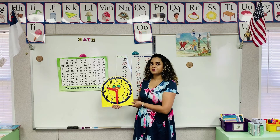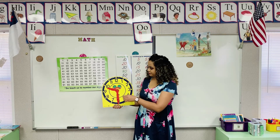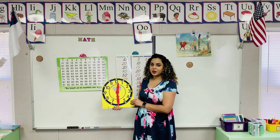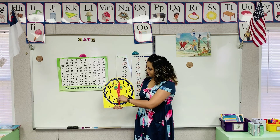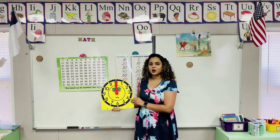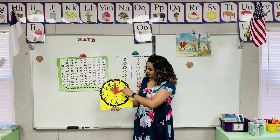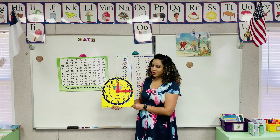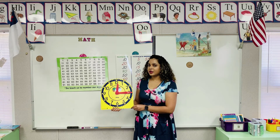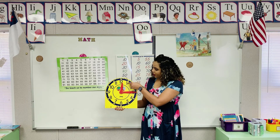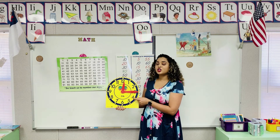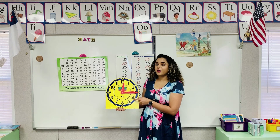What time is it? Nine thirty. Twelve thirty. Twelve o'clock. How about now? What time is it? 12:15. Are you sure? Let's count the minutes together. 5, 10, 15. Remember, each number on the clock represents 5, so we count by 5. So it is 12:15.